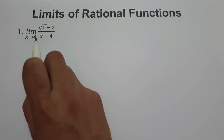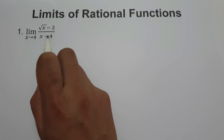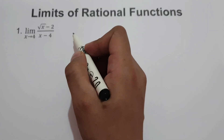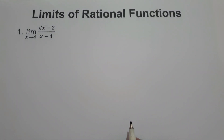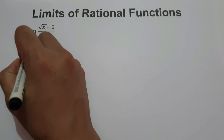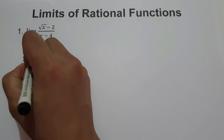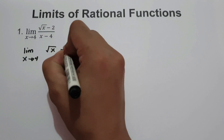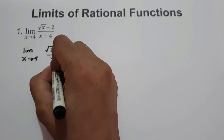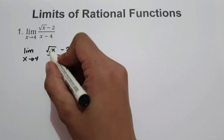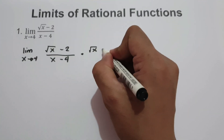Since we cannot factor the given expression directly, and if we substitute the value of x, we will end up with 0 over 0, or indeterminate. So what are we going to do in order to simplify the given expression? Since we have the limit as x approaches 4 of square root of x minus 2, all over x minus 4, let's multiply by the conjugate, square root of x plus 2.